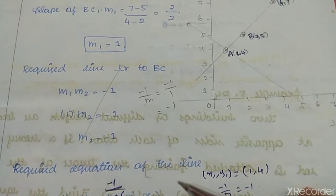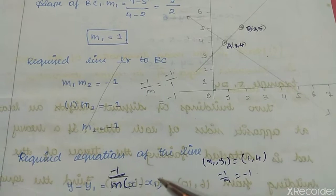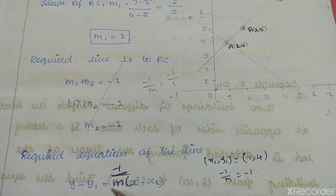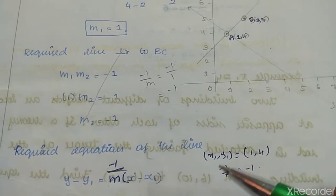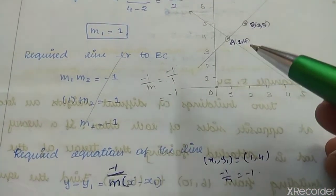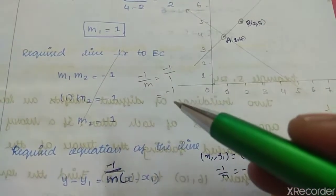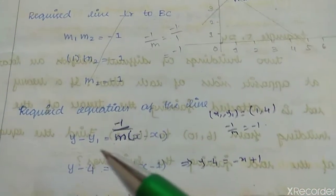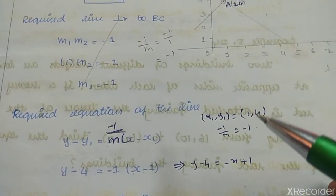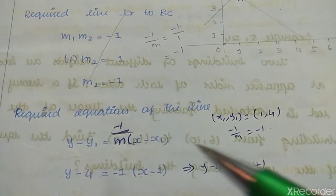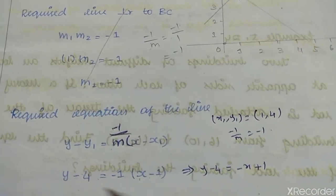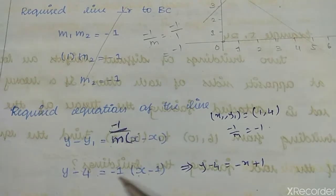The required equation of the straight line is y - y1 = m(x - x1). Where (x1, y1) is (1,4) and m = -1. Substituting: y - 4 = -1(x - 1), which gives y - 4 = -x + 1.